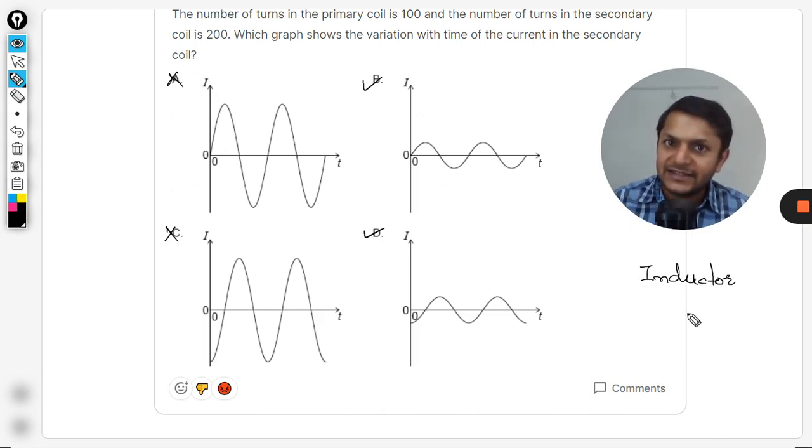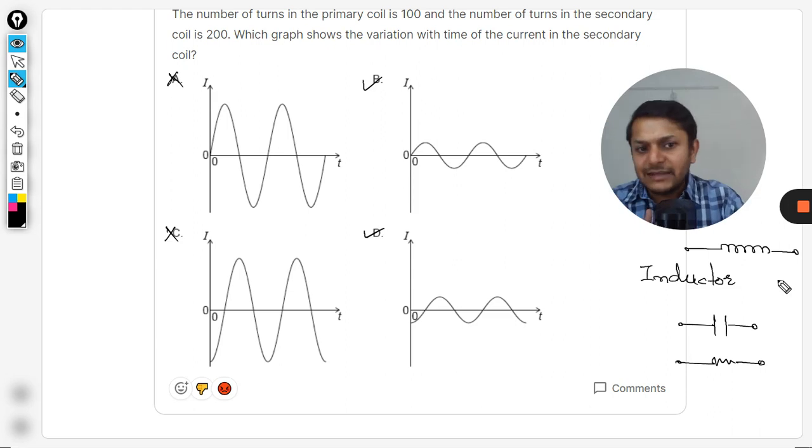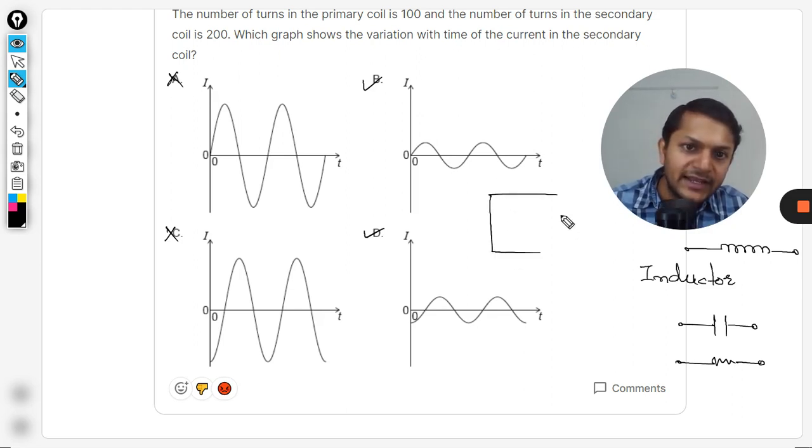It is a device which is very similar to capacitor or resistor. Inductor is a device which is actually a solenoid and this is the symbol. Solenoid, when used as a device in a circuit, is known as inductor. In transformer these are the coils.